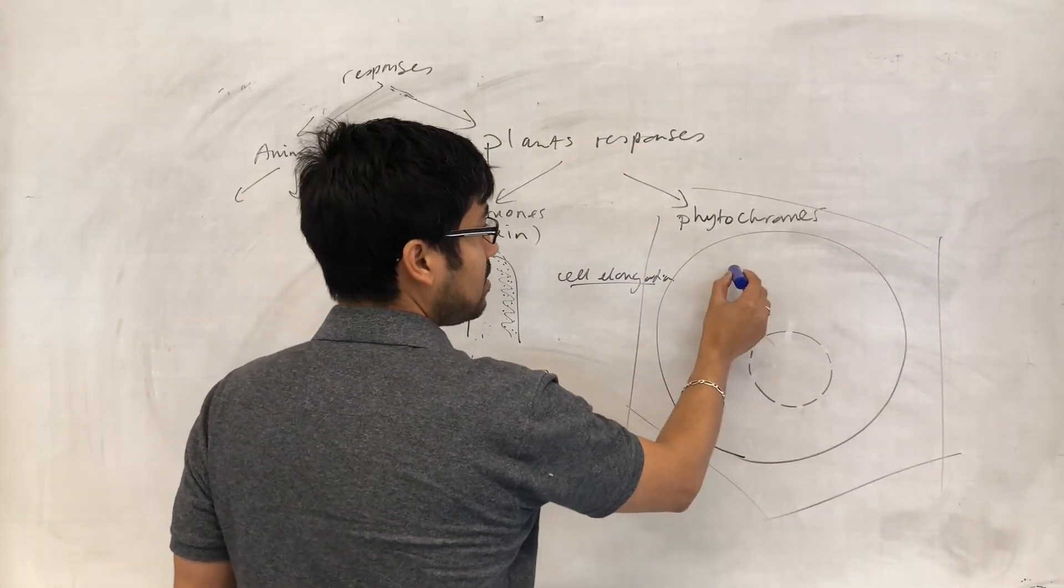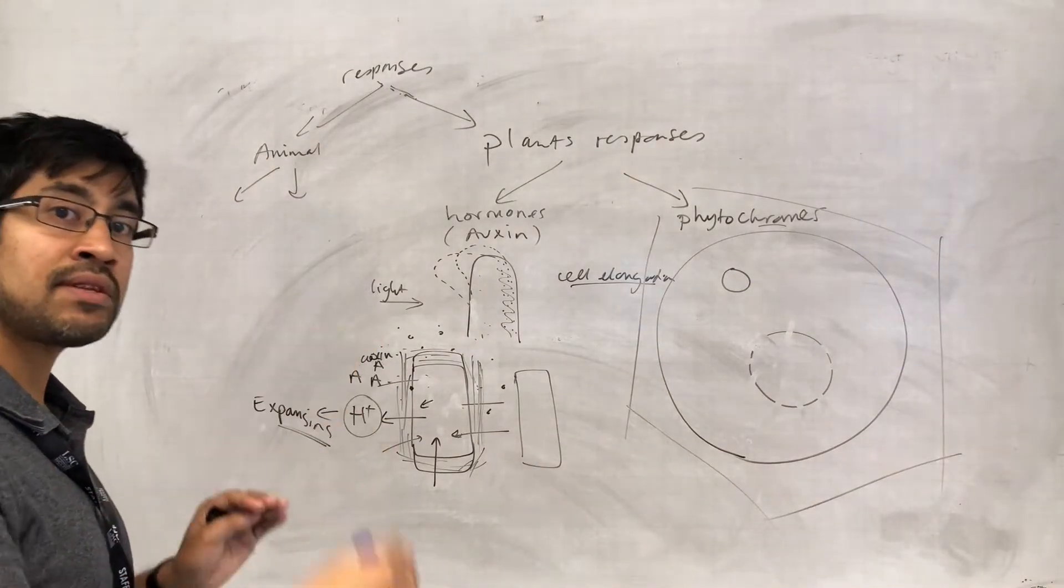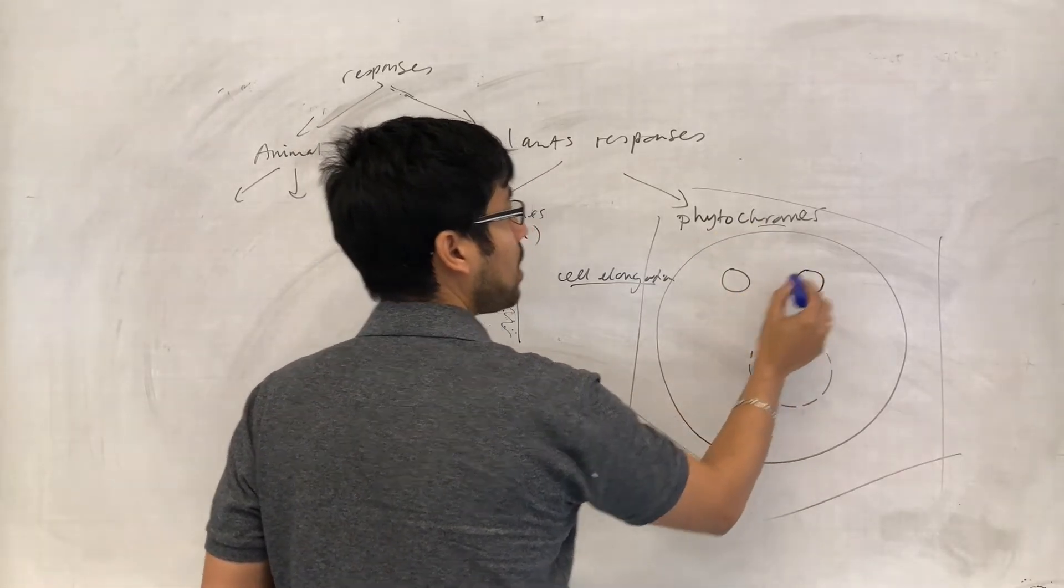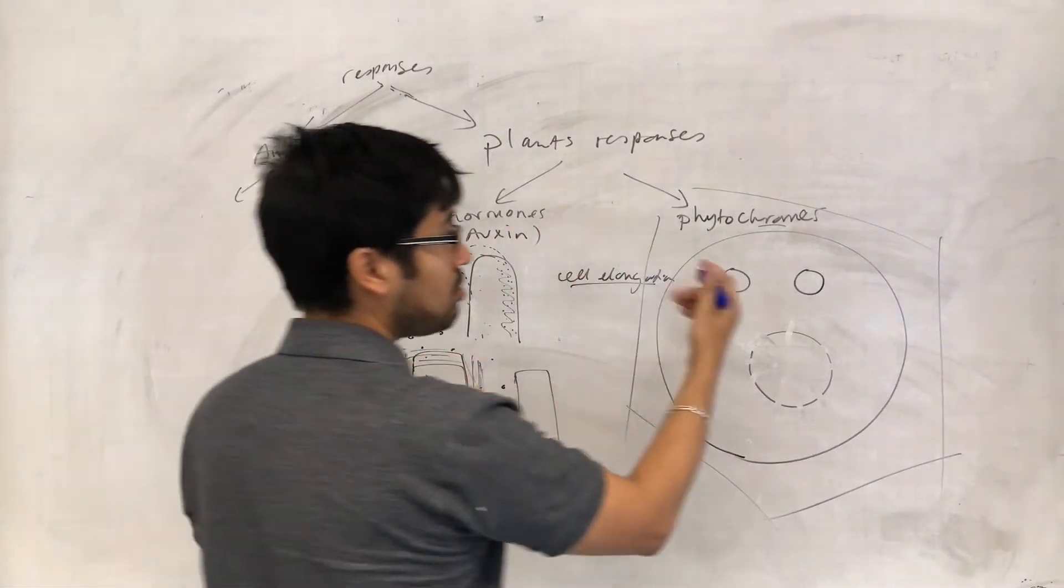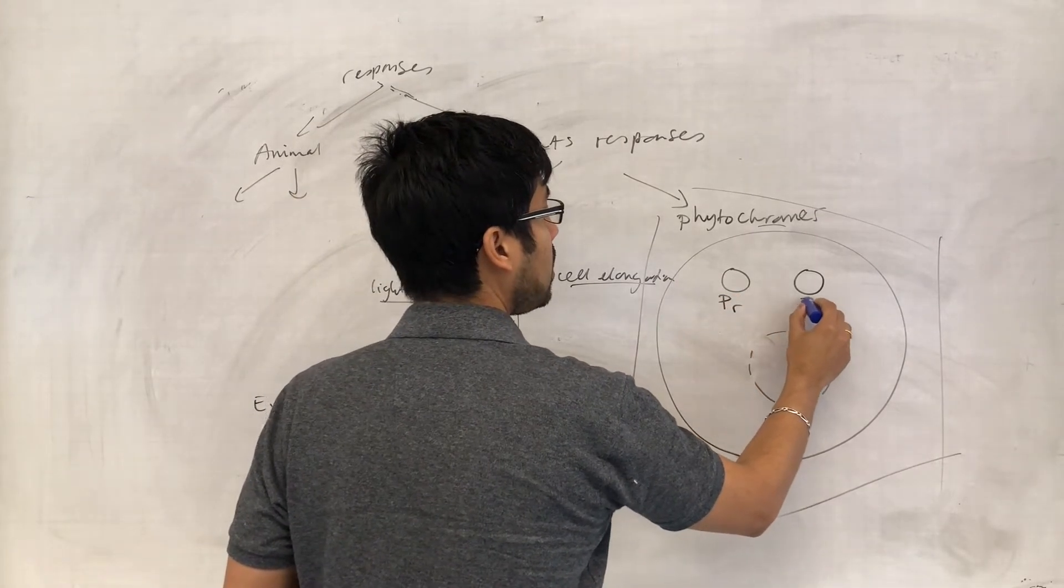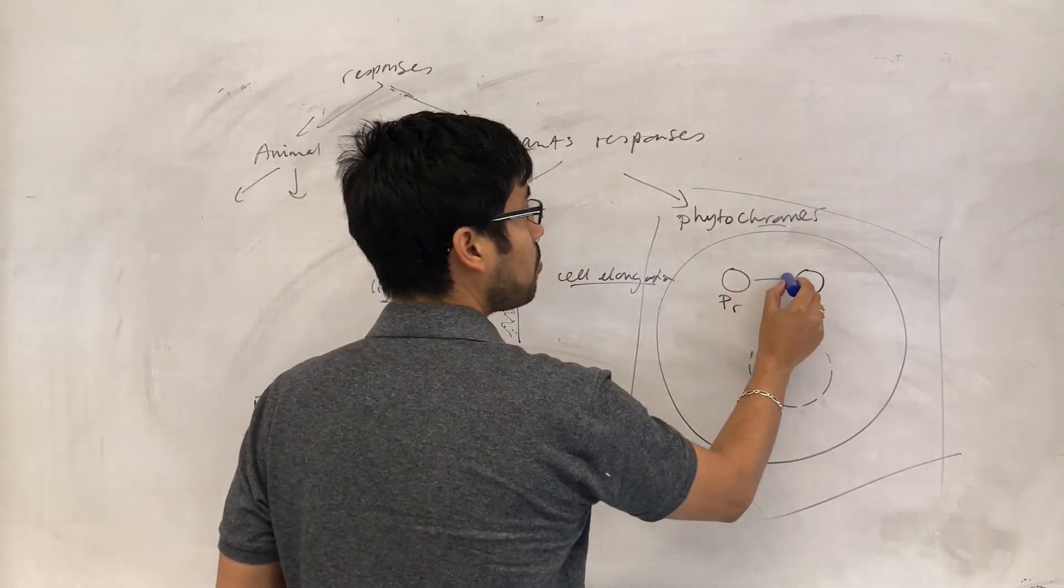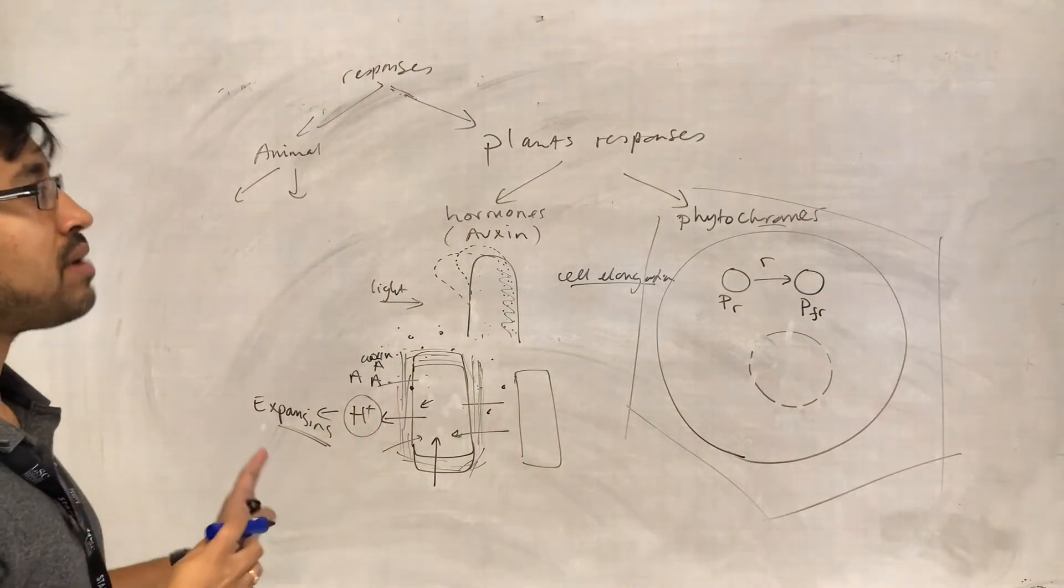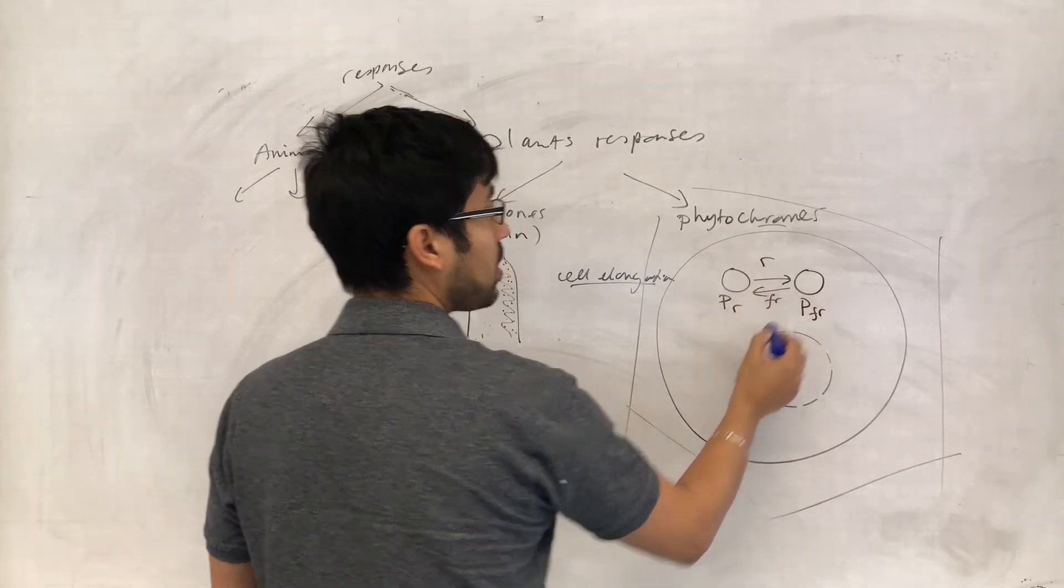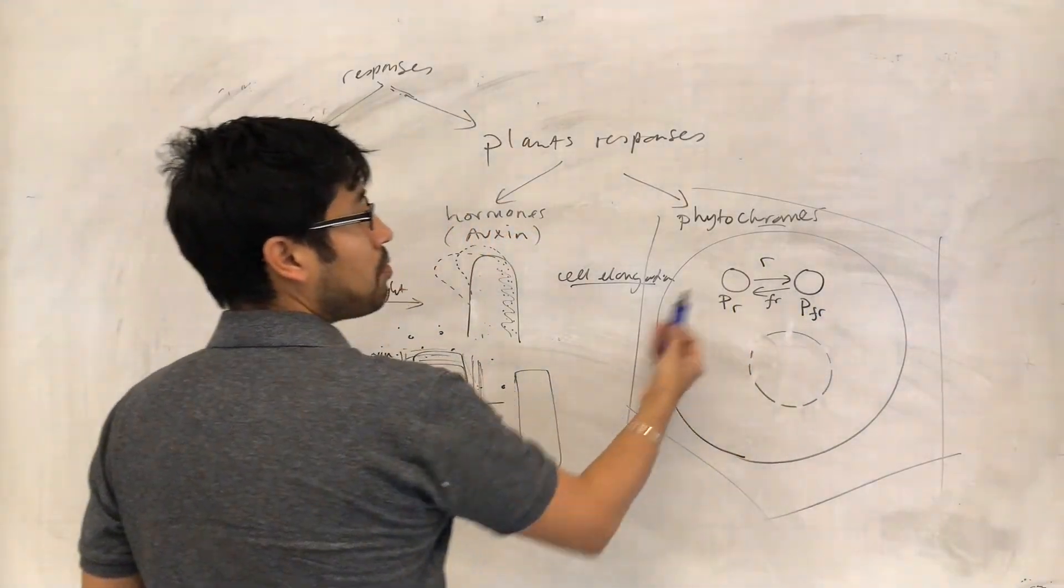And what this is, is essentially a protein that is attached to a non-protein component that gives it the ability to be sensitive to light. And the phytochromes can exist in two forms, based on the wavelength of light that is being absorbed. So we've got the PR form and we've got the PFR. PR absorbs light of a more red wavelength and becomes PFR. Whereas PFR absorbs light of the far red wavelength, I imagine that to be kind of more dark red, and when it does so it becomes more PR.